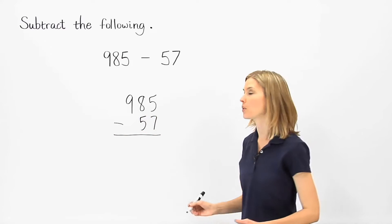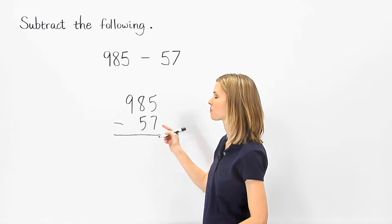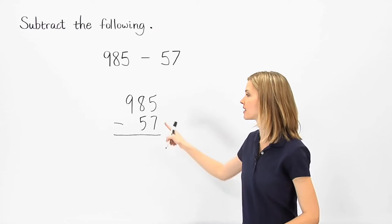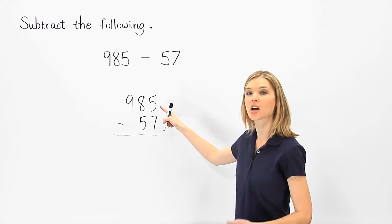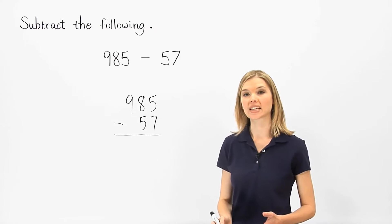Notice, however, that when we try to subtract the unit's digits, we have 5 minus 7. Since we can't subtract 7 ones from 5 ones, we instead subtract 7 ones from 15 ones. To do this,